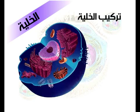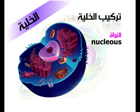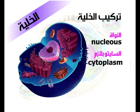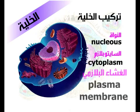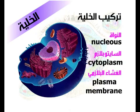تركيب الخلية. بالرغم من الاختلافات التي تشاهد بين الخلايا من حيث الحجم والشكل، فهي تشترك في صفات معينة؛ حيث توجد فيها النواة التي تحاط بالسايتوبلازم المحاط بغشاء بلازمي، ويحتوي السايتوبلازم على العضايات.